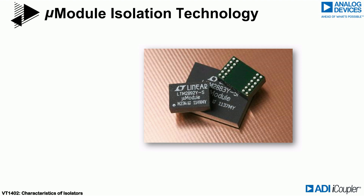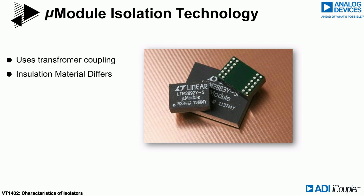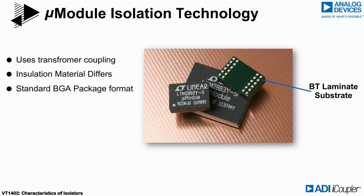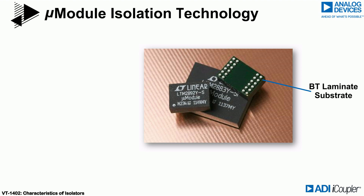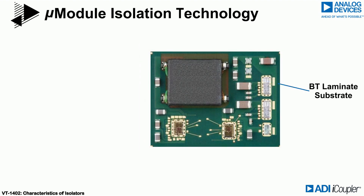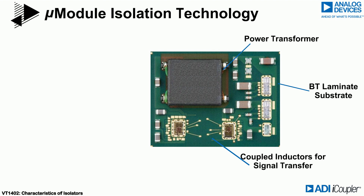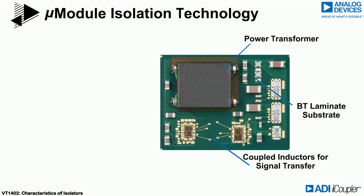As noted previously, micromodule technology also uses transformer coupling, but a different insulation material. These products are in a standard BGA package format that contains a BT laminate material, which is visible from the bottom. The BT laminate serves as the insulation. If we look inside the package, we can see the individual elements that form the data and power isolation. Coils are patterned into the inner layers of the laminate to provide the data communication functionality. A power transformer is also integrated into the packaging, which provides high power capability and improved power transfer efficiency. Many support components can be integrated, making the products very easy to design with.